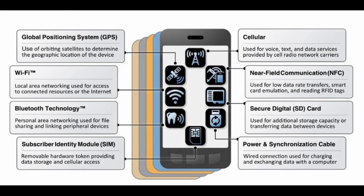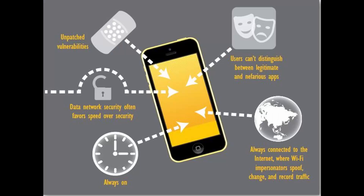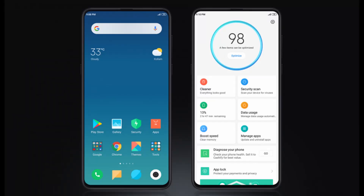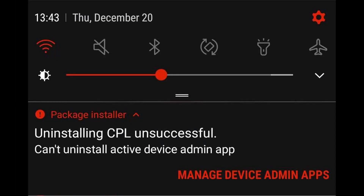Most people are aware that their smartphone may contain some vulnerabilities, and that they should be careful about the settings they choose, cautious when using the device to send and receive sensitive data, and wary about the kind of apps they install. But would you have imagined that a brand new phone straight from the factory comes with pre-installed spyware? The phone may have an invisible app that obtains elevated admin privileges and does things that you as a user can hardly detect and cannot disable.